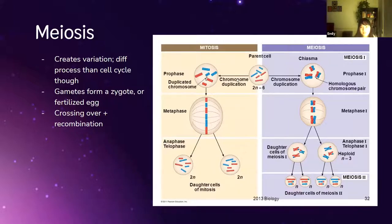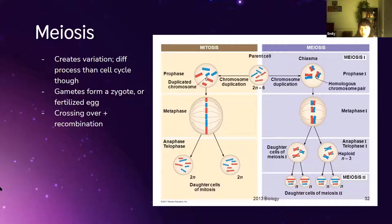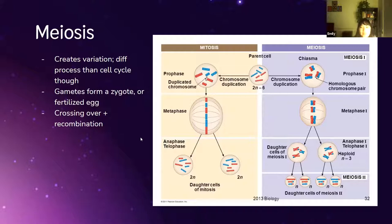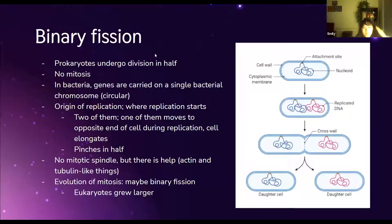In meiosis, the cell also replicates its genome, going from 2n to 4n again. But this time it undergoes two divisions — meiosis one and meiosis two — making four cells total. So each of the four cells ends up with n chromosomes — that's haploid. So mitosis gives rise to diploid cells, and meiosis gives rise to haploid cells.